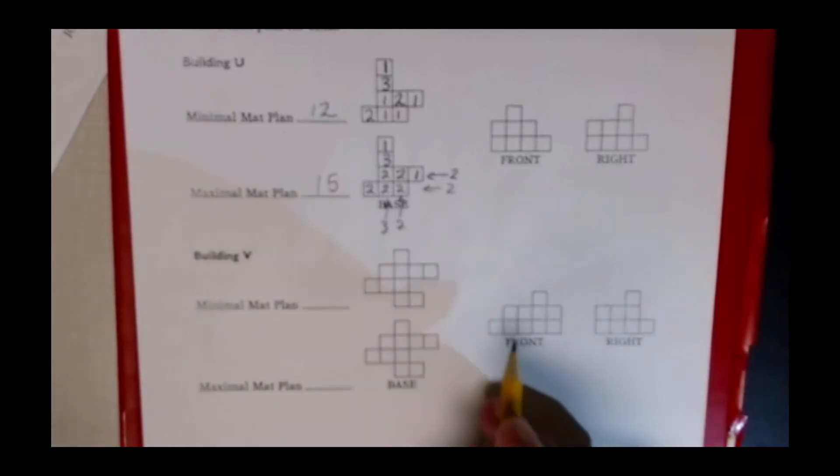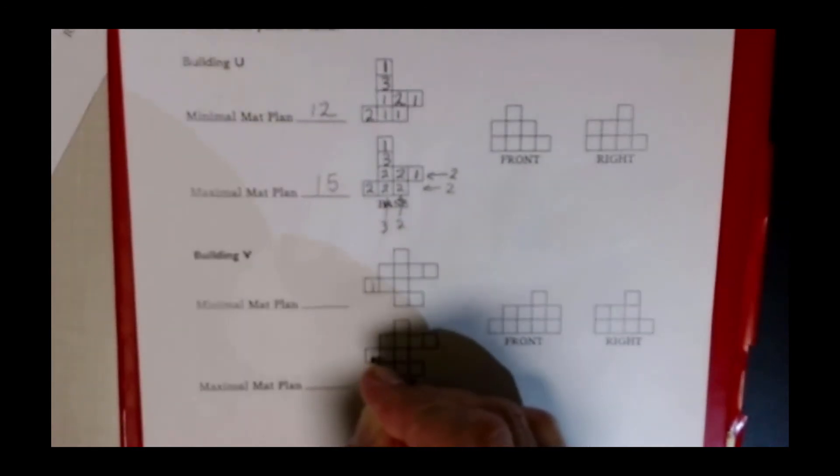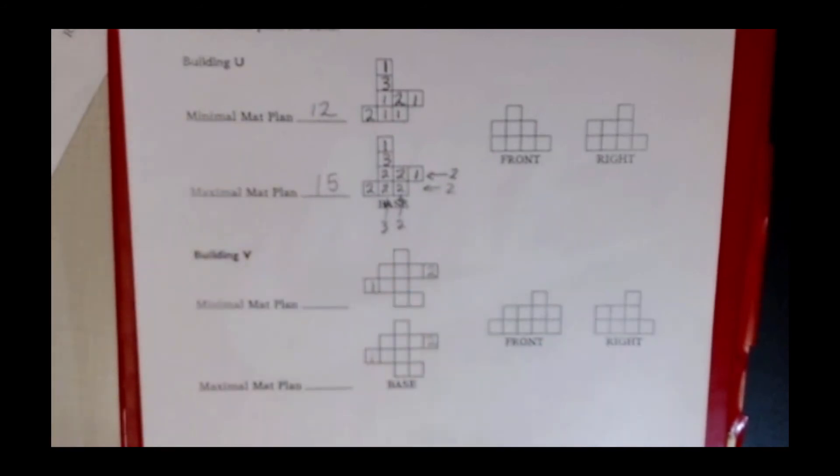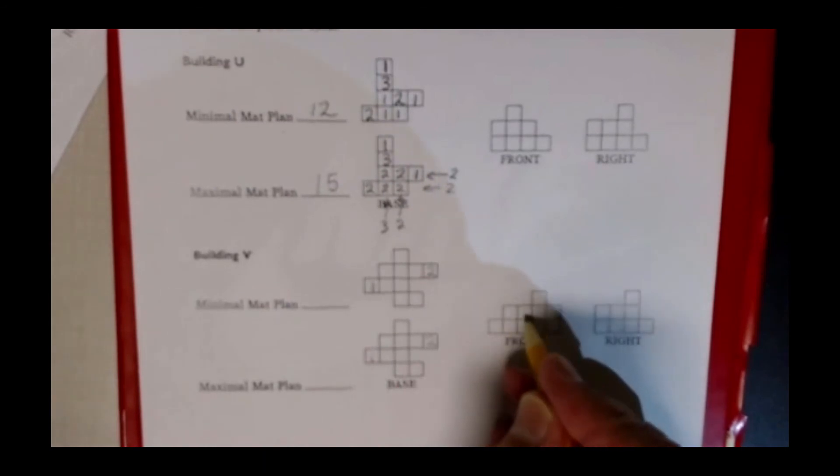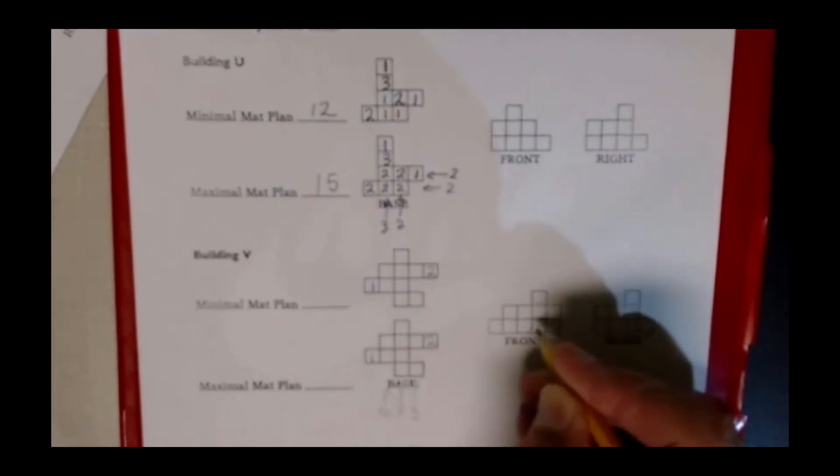If we look at this front view on the left hand side I have only 1 cube high, that's going to correspond to a 1 here and here. On the right hand side I have 2 cubes high which means I'm going to have a 2 over here and a 2 here in my maximal. In these three center positions I need to have a 2 somewhere in this column, I need to have a 2 somewhere in this column, I need to have a 2 somewhere in this column, and I need to have a 3 somewhere in this column so that I have these 3 high.